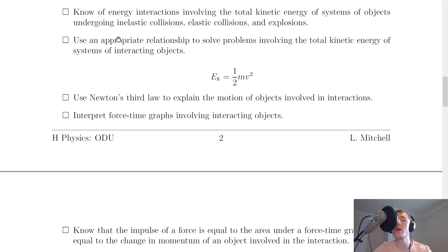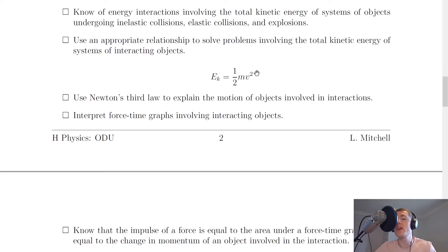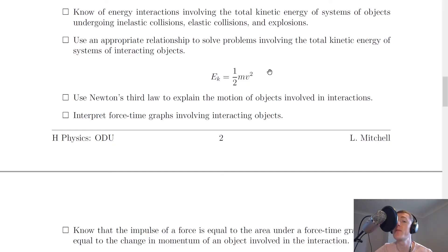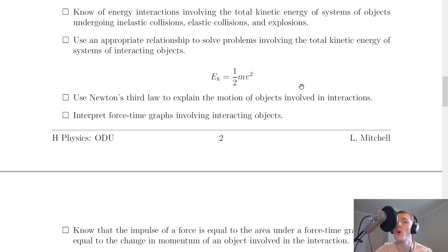You need to use the kinetic energy equation Ek equals a half mv squared to calculate the kinetic energy before and after an interaction. Before the interaction: Ek equals a half m1u1 squared plus a half m2u2 squared. After the interaction: Ek equals a half m1v1 squared plus a half m2v2 squared, for two objects.